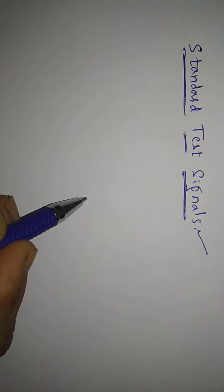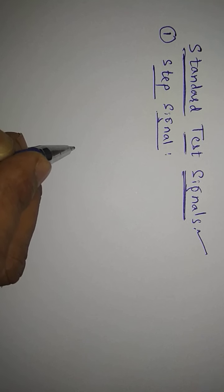The very first signal is the step signal. A step signal is a signal whose value changes from one level, usually from zero, to another level in zero time. That is the definition of a step signal.